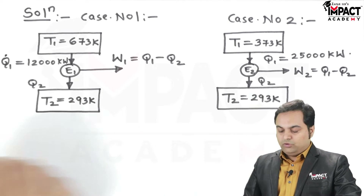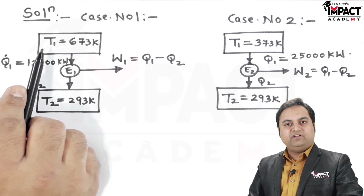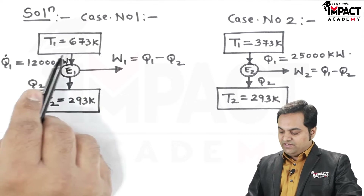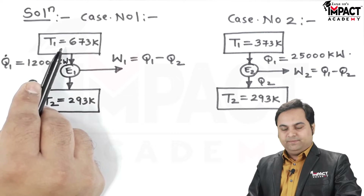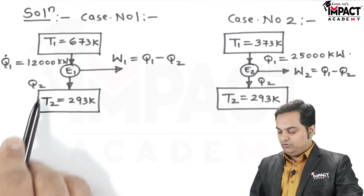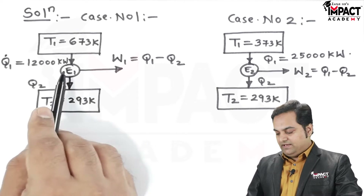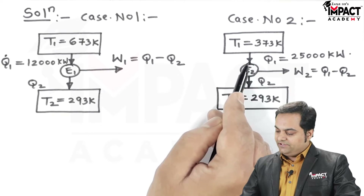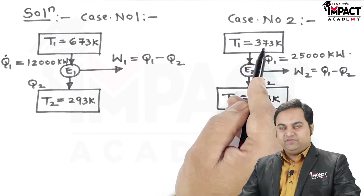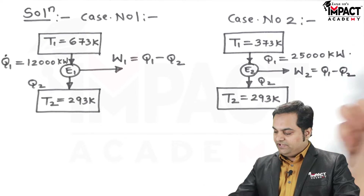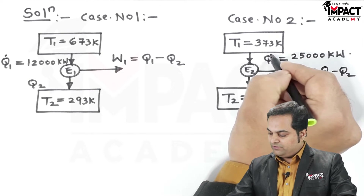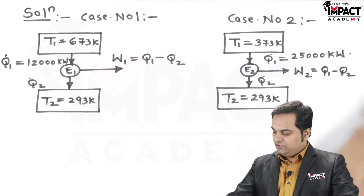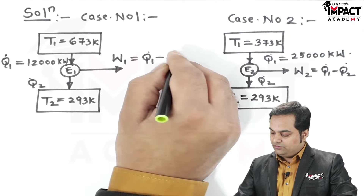Always remember that the source has the higher temperature and the sink has the lower temperature. Engine 1 takes in heat Q1 dot of 12,000 kilowatts from the high-temperature source, rejects heat to the low-temperature sink, and in doing so produces work W1. Similarly, for engine 2, taking in heat from a source at temperature T1 of 373 Kelvin, the amount of heat taken is 25,000 kilowatts, and it produces work W2 dot equals Q1 dot minus Q2 dot.